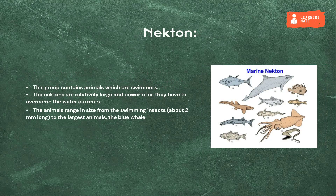Nekton: this group contains animals which are swimmers. The nektons are relatively large and powerful as they have to overcome the water currents. The animals range in size from the swimming insects, about 2 mm long, to the largest animals, the blue whale.